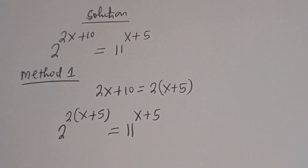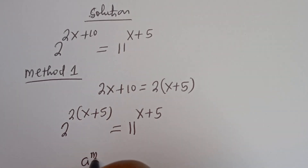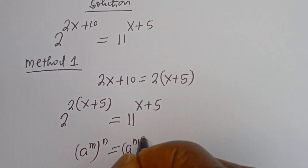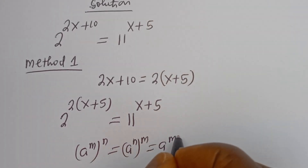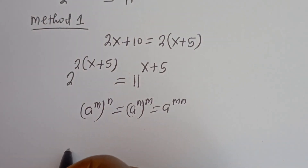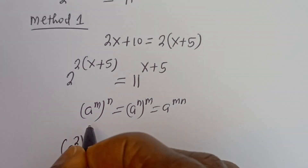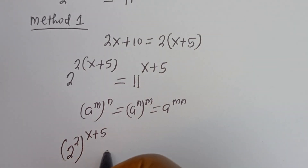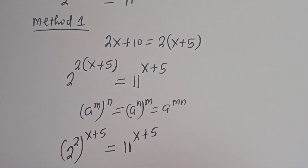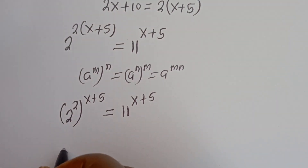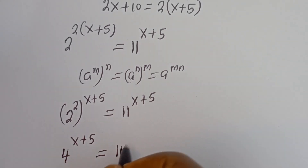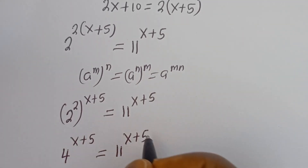Take note that if you have a to the power of m to the power of n, this equals a to the power of mn. Then this can be written as 2 to the power of 2, to the power of x plus 5. Since 2 to the power of 2 is 4, this becomes 4 to the power of x plus 5 is equal to 11 to the power of x plus 5.